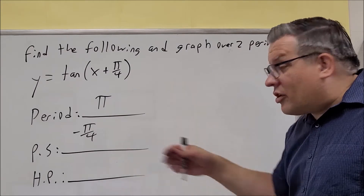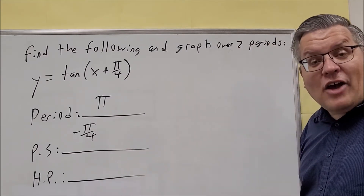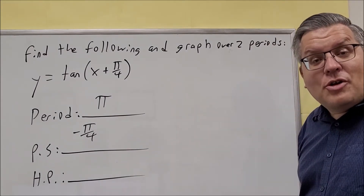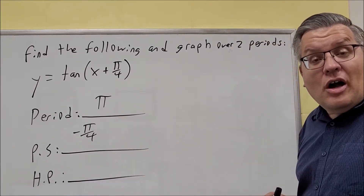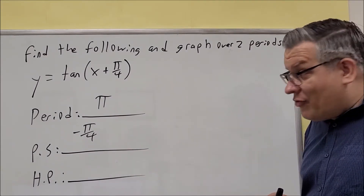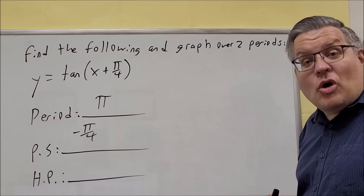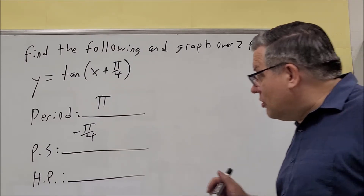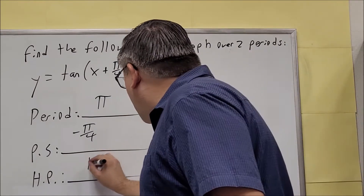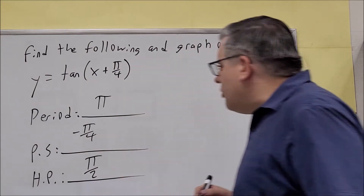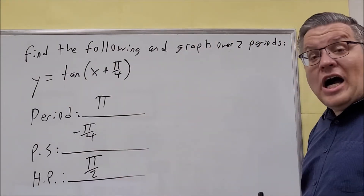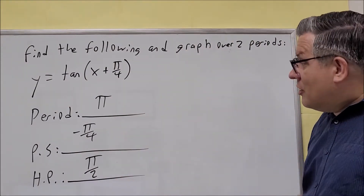We're also going to find the half point, because we're going to use that later when we get our graph. The half point is always your period divided by 2. So your half point for this problem is going to be pi over 2.